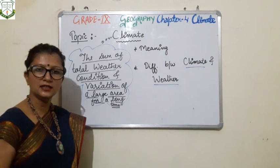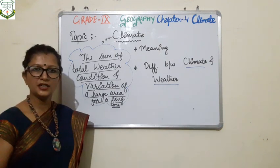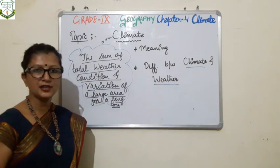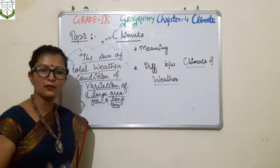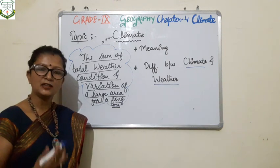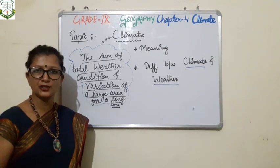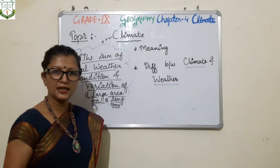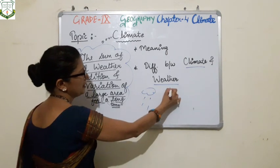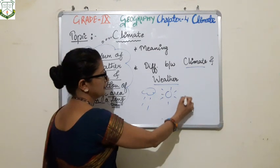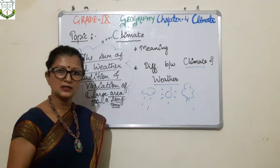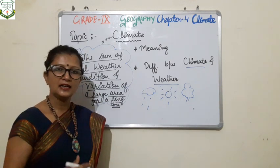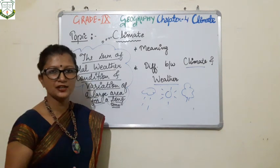The climate of any large area remains for a long duration — it may be for one month or two months. The factors affecting climate and weather are the same: temperature, humidity, pressure, and wind. Whereas weather may vary within a day — weather may be rainy, sunny, or moderate. For example, in the morning the sun may be shining brightly and all of a sudden in the afternoon clouds start appearing. This sudden change in the climatic condition is called weather.